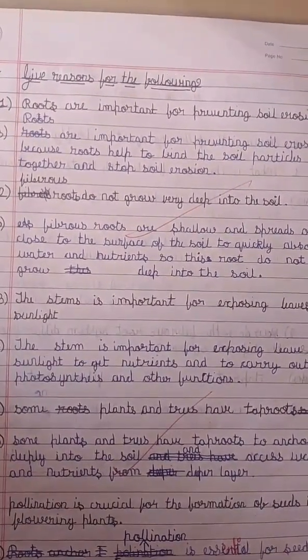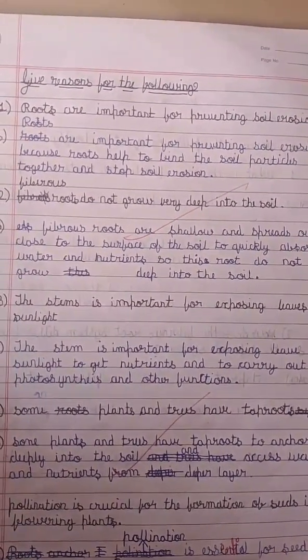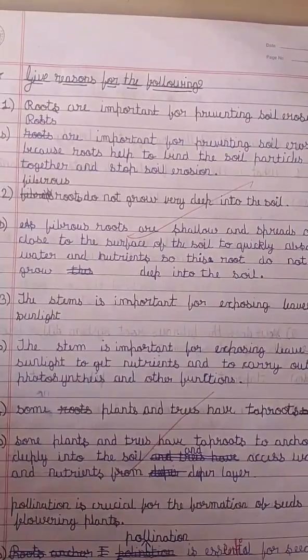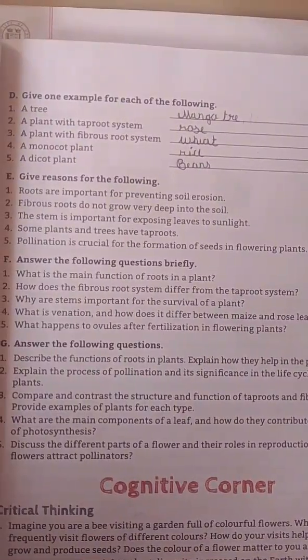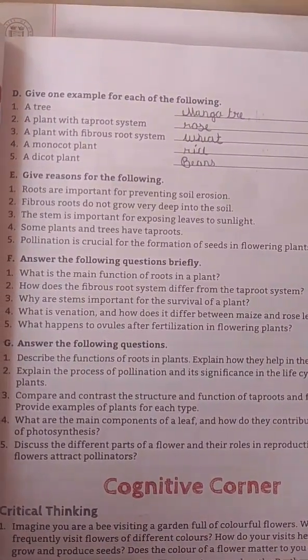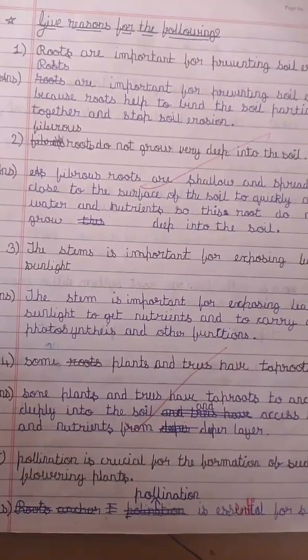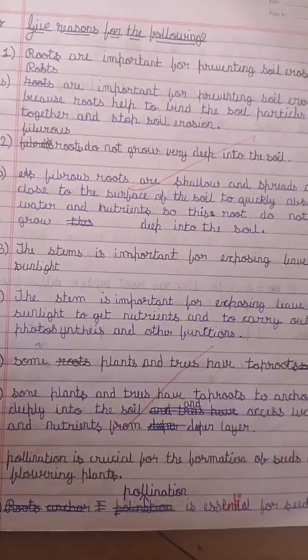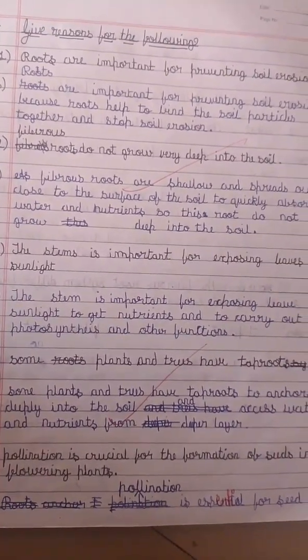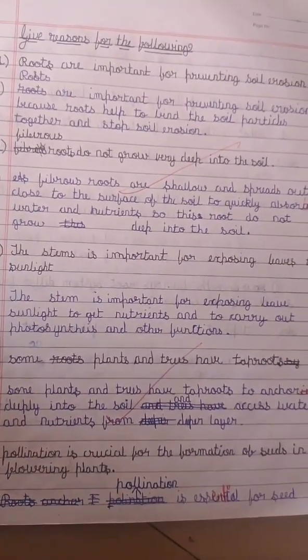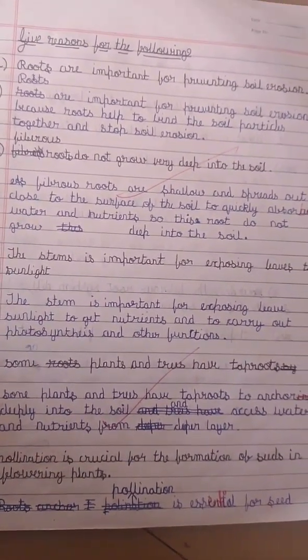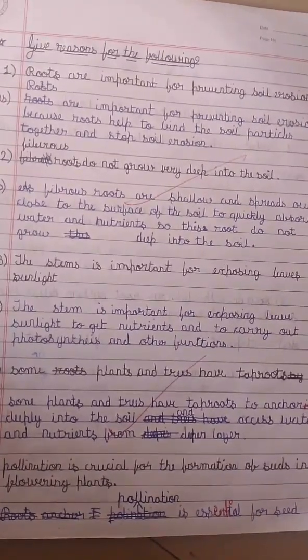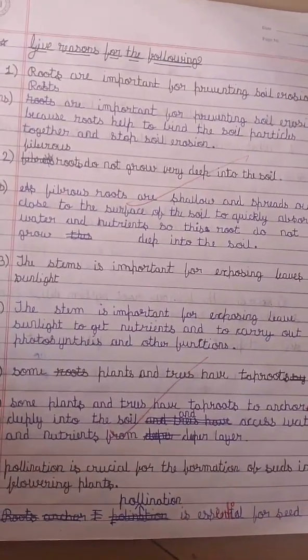Fourth question: some plants and trees have tap roots. Answer: some plants and trees have tap roots to anchor deeply into the soil and access water and nutrients from deep layers.